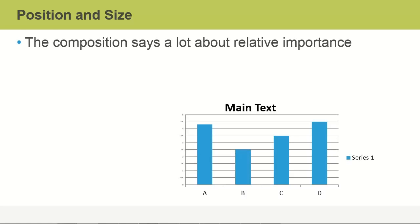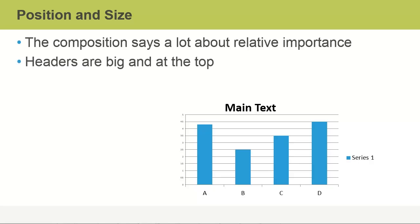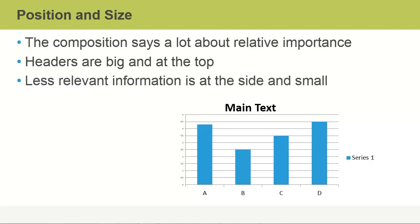Viewed as a whole, the composition says a lot about relative importance. It's all about perception, and we perceive differences in quantitative values very accurately when size or length is used. Headers are prominently displayed, relatively large and at the top of the visual. Less relevant information is best located at the side and relatively small in size.